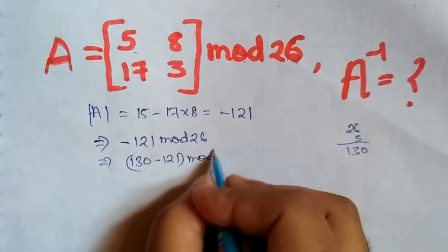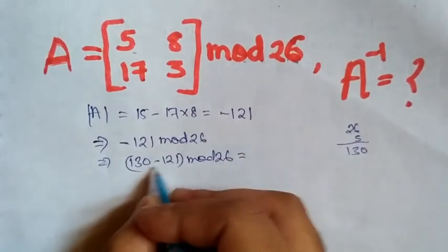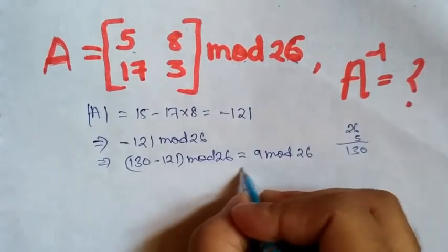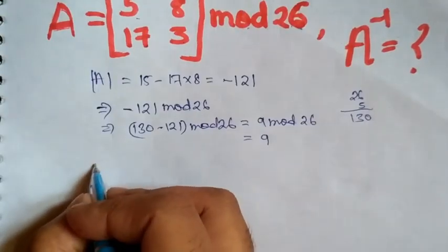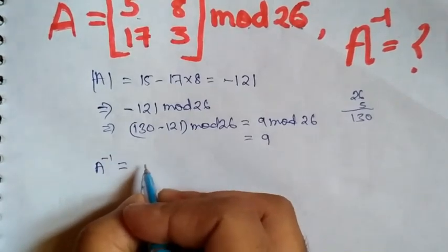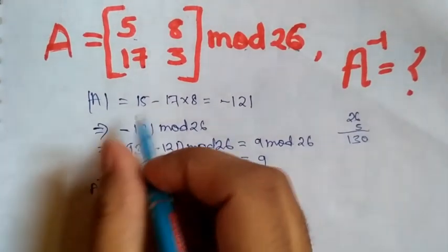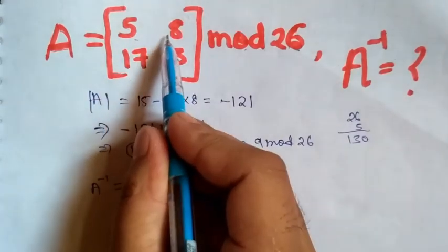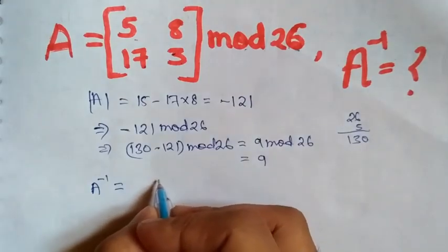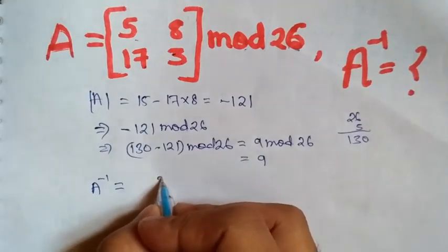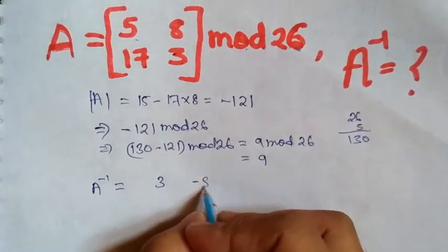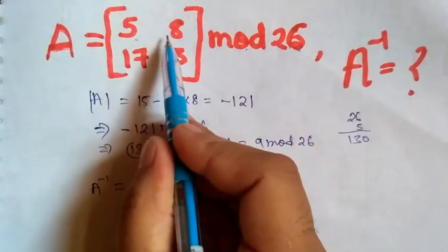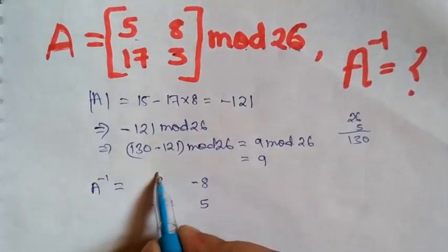Now for finding A inverse, we know that for a 2 by 2 matrix, this value will be changed and minus will come ahead. So 3, minus 8, minus 17, and 5. This value changes and minus comes, this is our matrix.